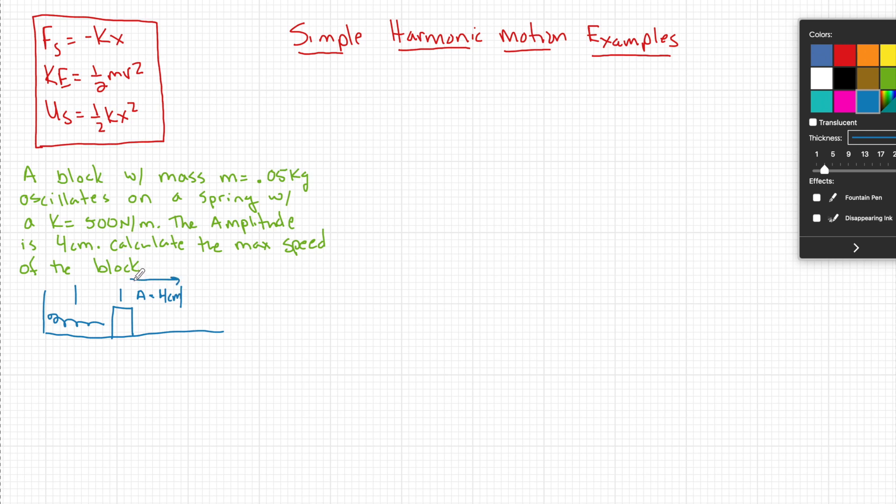Remember guys, A is the distance from equilibrium to the maximum stretch or the maximum compress. Now, when I want to know the max speed, I know that speed is going to be in the form of kinetic energy. And I know that it's going to come from some potential energy. The only other way to get kinetic energy would be if I had an applied force or something from the outside, but this is a closed system. So I know that it has to be some sort of potential energy that is going to get converted into kinetic energy. Now, we also know from the video that right here at the center, this is max speed. So that's going to be the location that we're going to be looking at. At max speed, X is equal to zero meters.